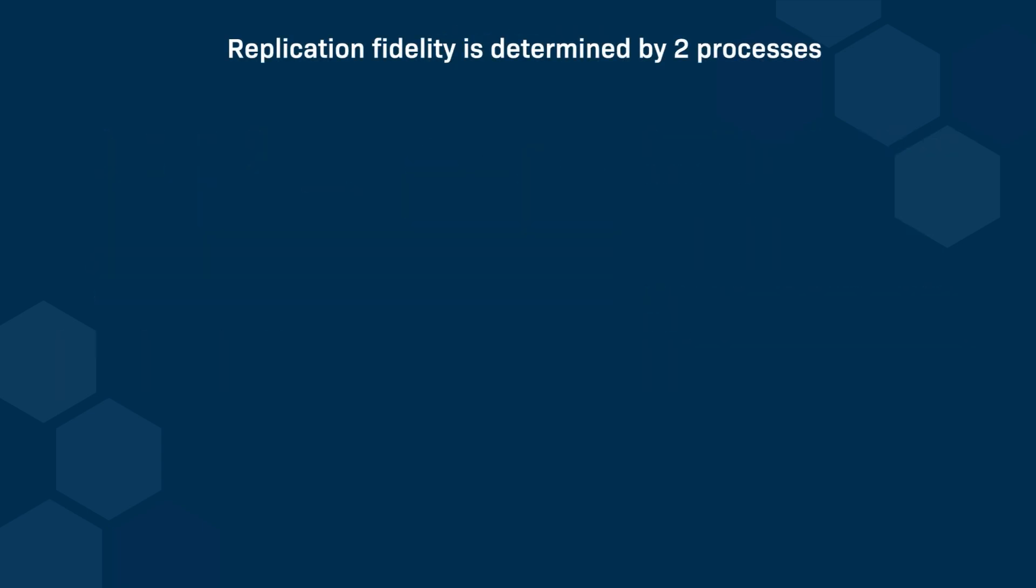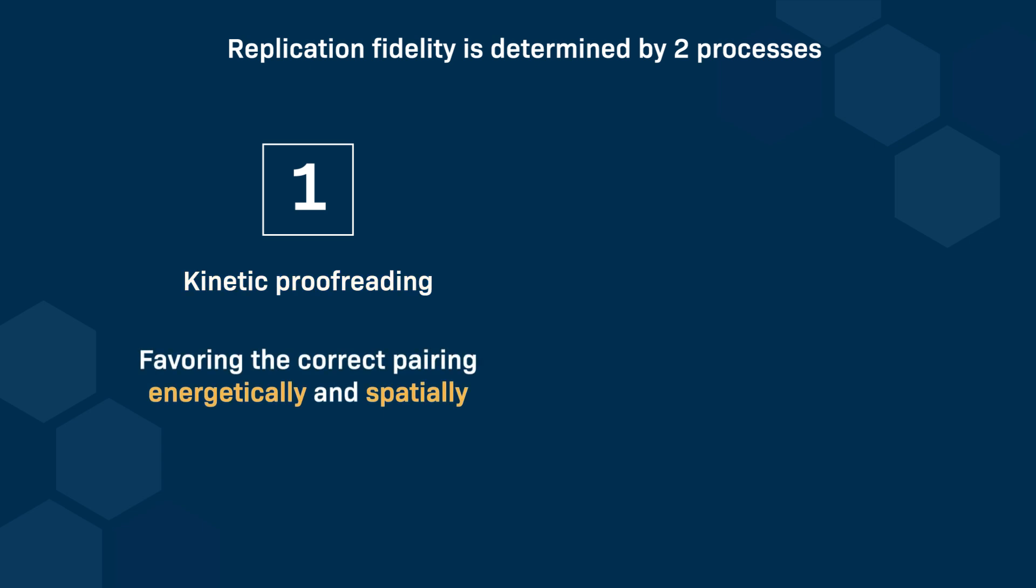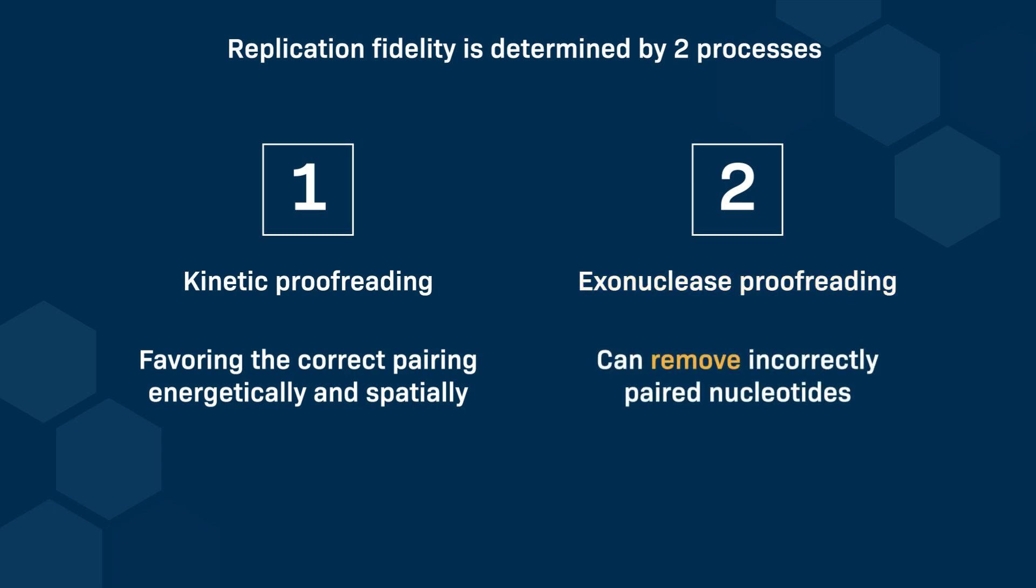Replication fidelity is determined by two key processes. The first process, kinetic proofreading, is based on the specific properties of the catalytic site. This ensures that the correct nucleotide is added by favoring the correct pairing energetically and spatially. The second process, exonuclease proofreading, depends on a specific domain or activity of the polymerase that can remove incorrectly paired nucleotides and ensure high fidelity during DNA replication. These mechanisms together ensure that DNA replication is both efficient and accurate, minimizing errors in the newly synthesized DNA strand.